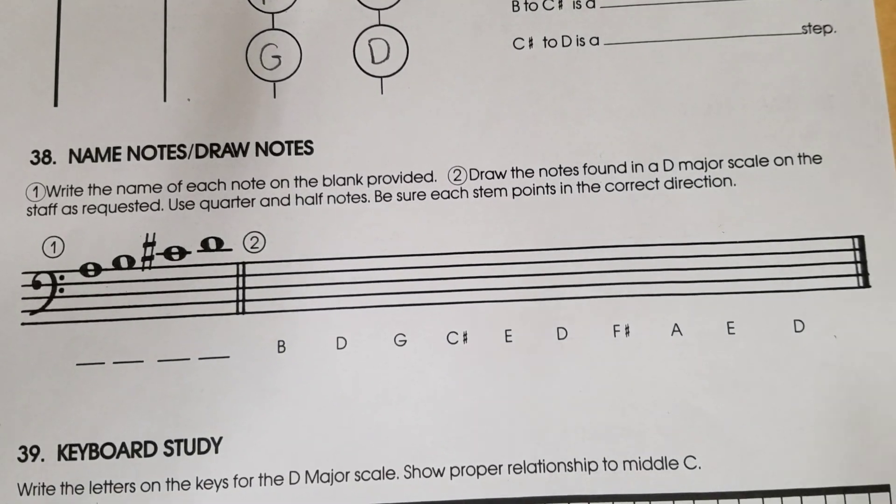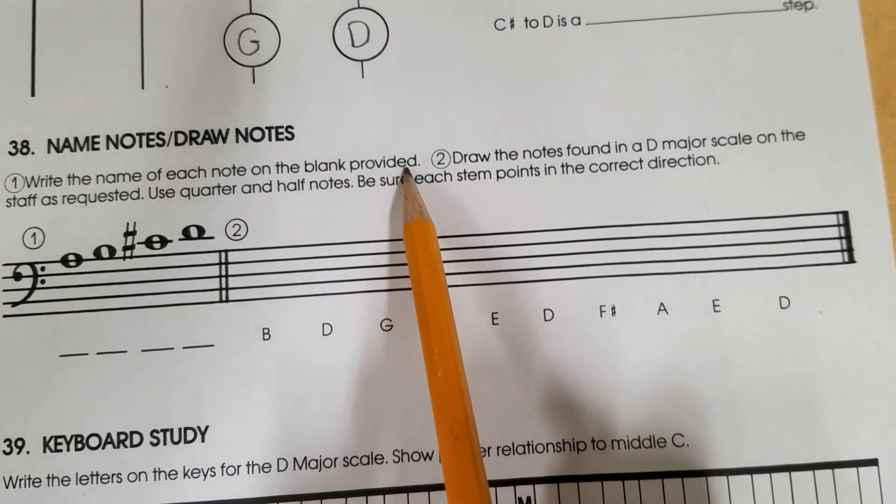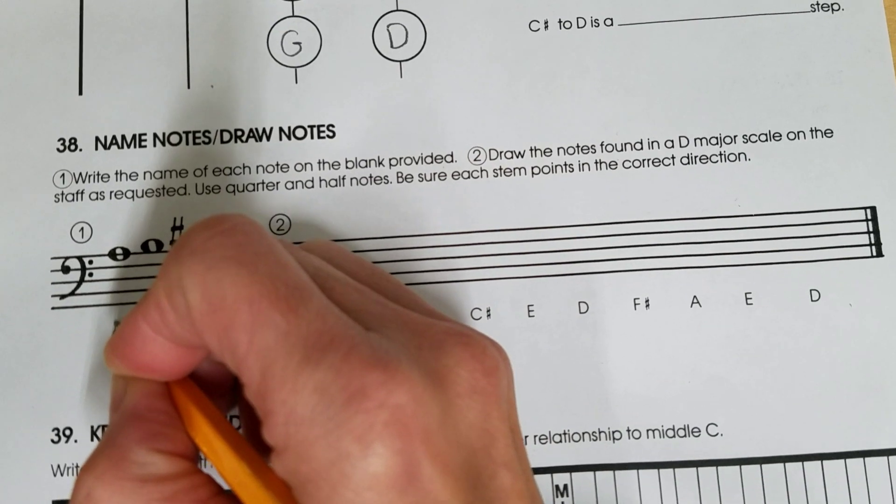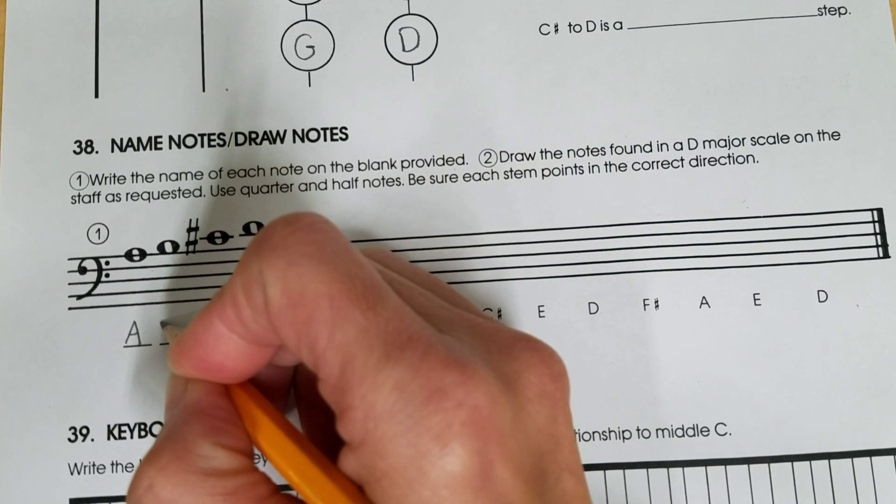For cello. Number one, write the name of each note on the blank provided. This is your open A. One note higher is like the next letter of the alphabet: A, B.